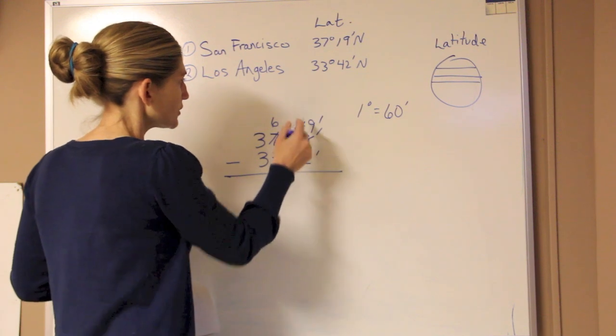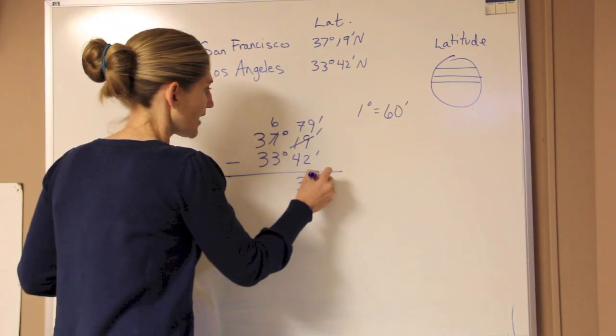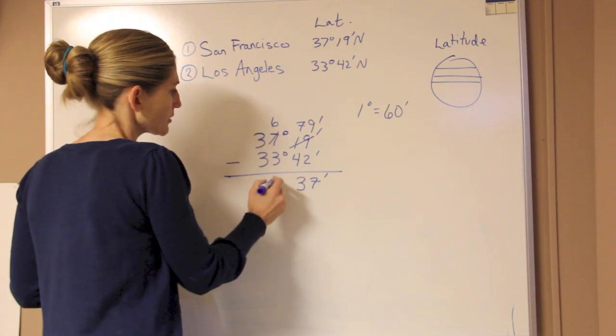Now 42 from 79 is 37 minutes. And then if we take 36 minus 33, it's just 3 degrees.